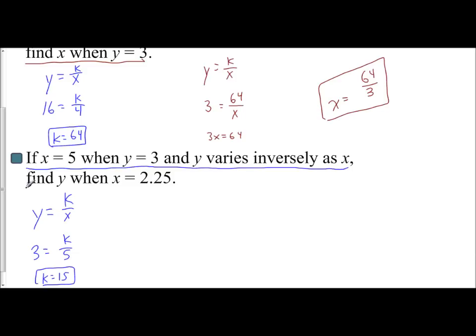And then I use the second part, find y when x equals 2.25. So y equals k over x. We now know our constant of variation is 15. I know my x is 2.25. I want to find y. And so what I'm going to do is take 15 divided by 2.25. And that is going to give me 20 thirds. And so that is my value for y.